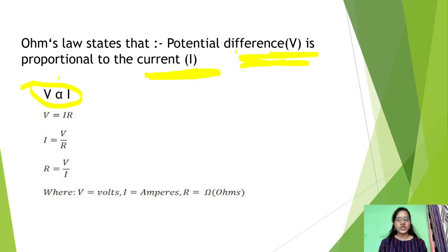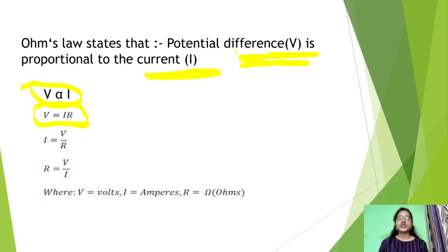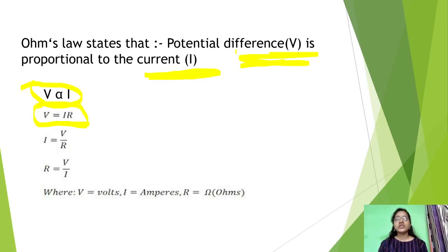Now, we remove the proportionality sign with a constant, and that constant is our resistance. So we get V is equal to I into R. This is a very important equation. We use this equation in many places and can solve many problems with it.